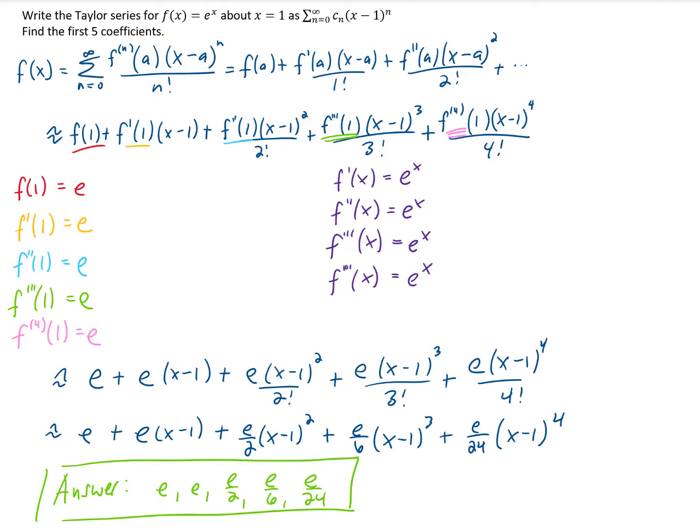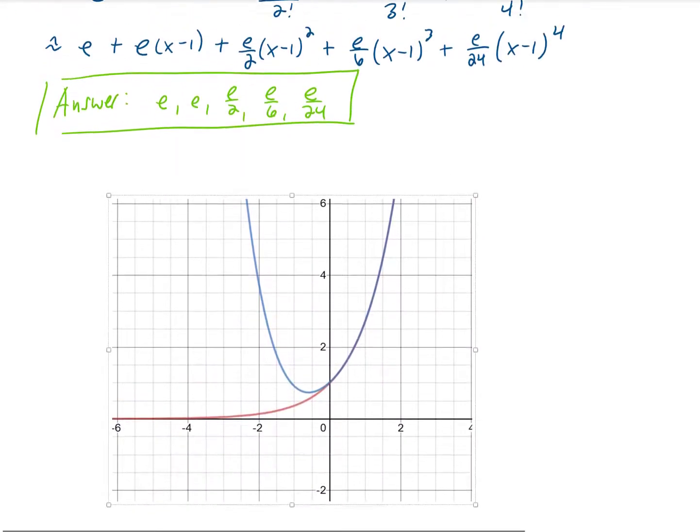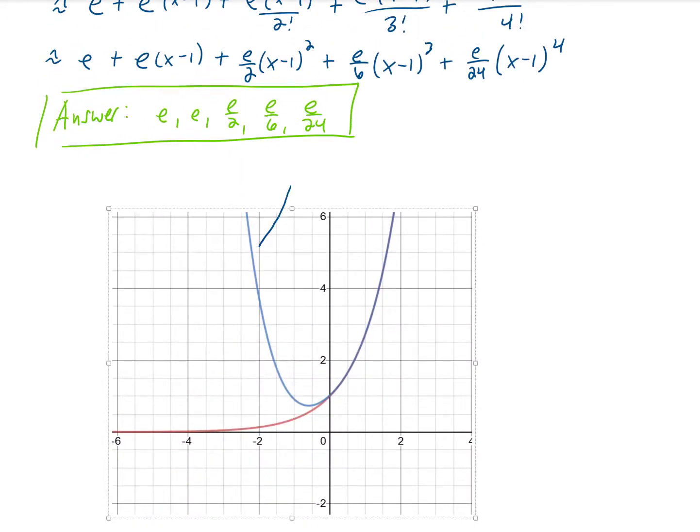The last thing I might show you would be a graph of this thing, both because it's neat and because it's a good way to check our answer. So this blue function right here is actually the first five terms of the Taylor series. The red function here is just e to the x.